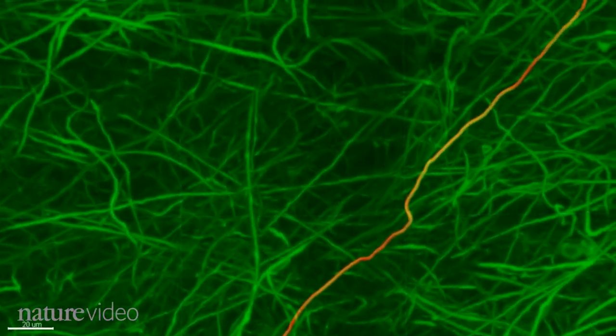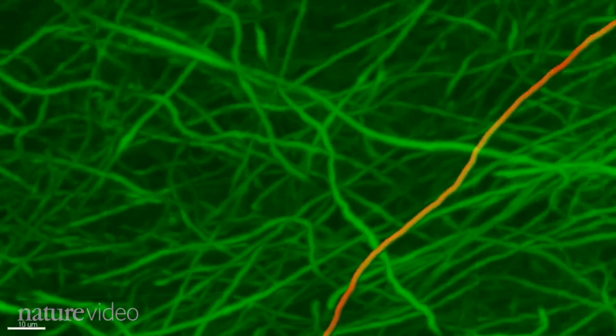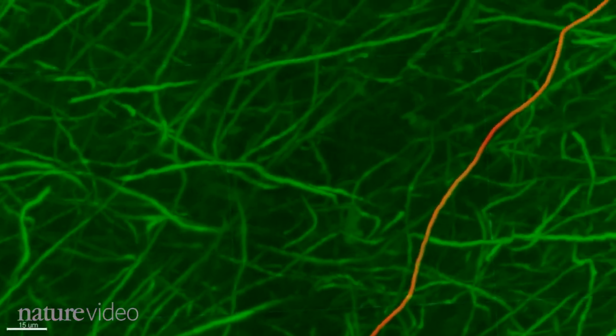The technique works in human brains too. This is a chunk of the frontal lobe of a seven-year-old boy who had autism. It's possible to trace the path of a single nerve projection through a forest of other cells.